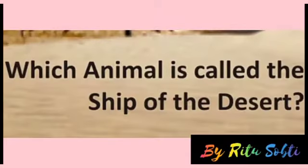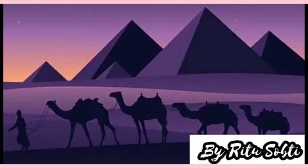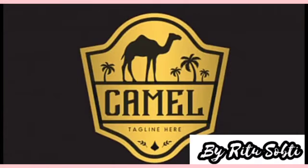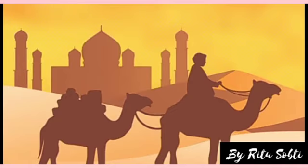Question number two: which animal is called the ship of the desert? The answer is camel. Camel is a useful domestic animal. It can easily walk in the desert, that is why it is called the ship of the desert. People also ride on camels.